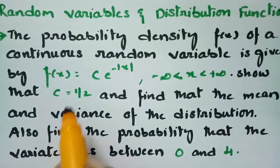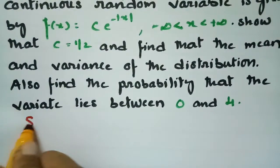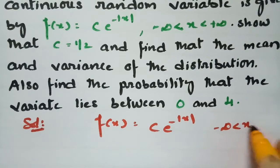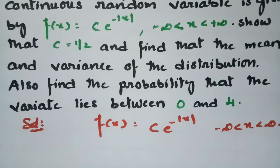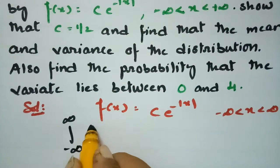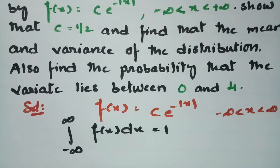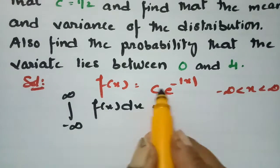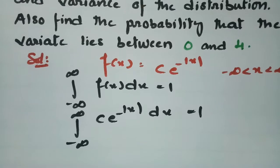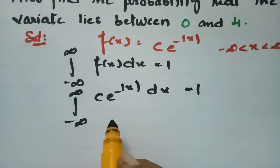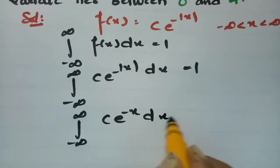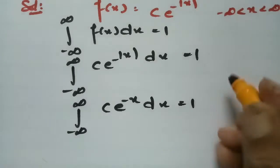To show that c equals half, we start from the given function f(x) = c·e^(-|x|) for x from minus infinity to plus infinity. Since the total probability is unity, the integral from minus infinity to plus infinity of f(x) dx equals 1. Since e^(-|x|) is an even function, we can write this as the integral from minus infinity to plus infinity of c·e^(-x) dx equals 1.